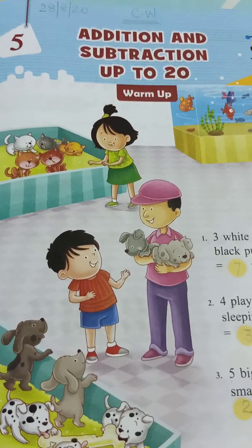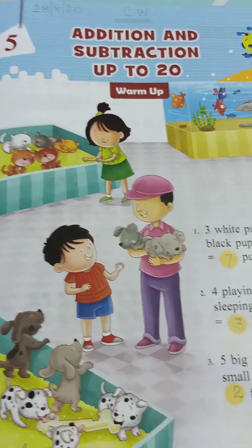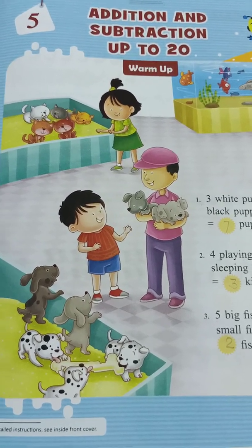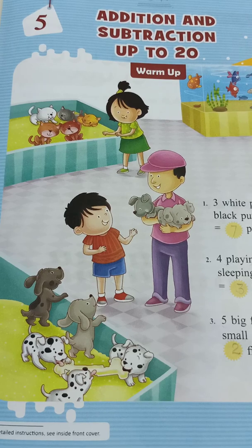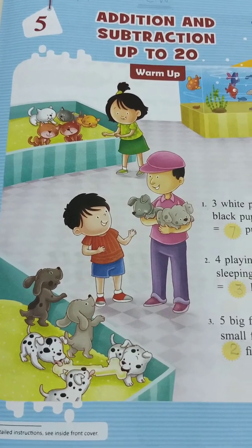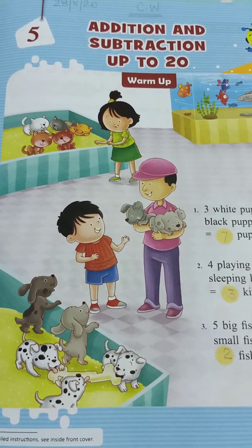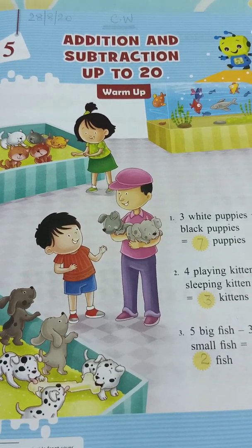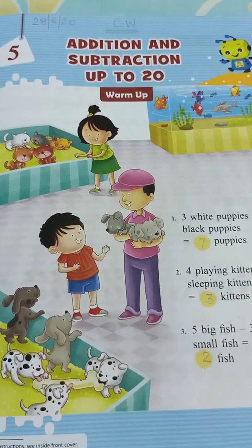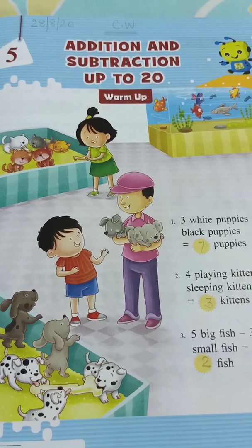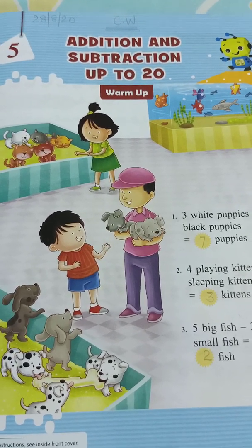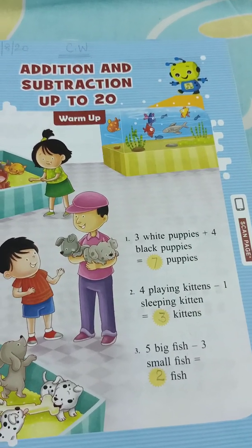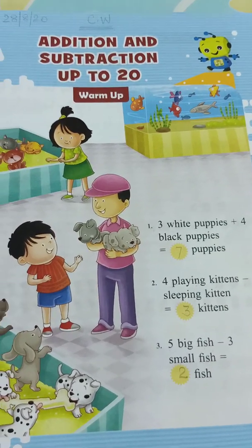Now let's warm up. What all things you have seen in this picture children? Yes. Puppies, kittens, a girl, a boy and a man holding two puppies. One fish aquarium. Isn't it? Now let's see.